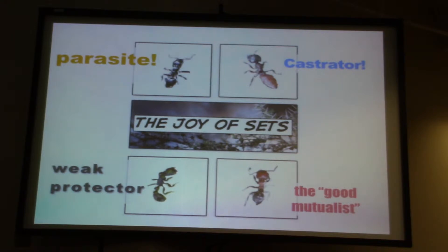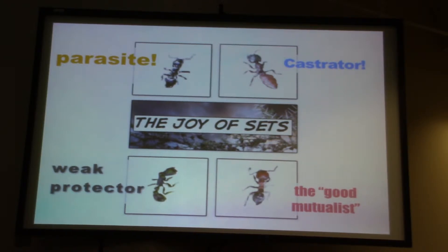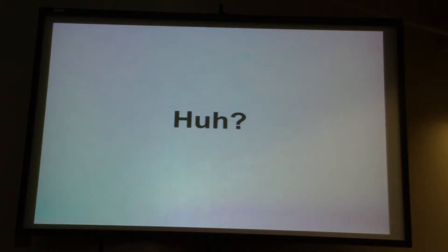One of the greatest disappointments of my professional career was that when we got this result, I really wanted to call the paper 'The Joy of Sets' — it's such a great title. Sets of these mutualists are joyful. Unfortunately, the journal said they eschew the use of puns — or humor — in their titles, and so we had to call it something else. But the idea is that sets of these mutualists are actually better for these trees than the single one we thought was the best associate.